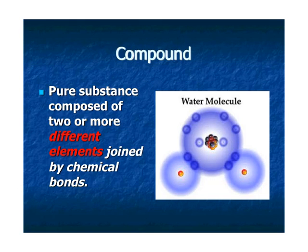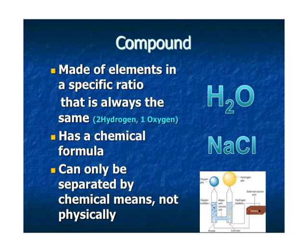A compound is a pure substance composed of two or more different elements joined by chemical bonds. Here you can see two hydrogen atoms and one oxygen atom, and they are chemically bonded together. Compounds are made of elements in a specific ratio that's always the same — water is always two hydrogen atoms and one oxygen atom. They have a chemical formula; for example, the formula for salt is NaCl. Compounds can only be separated by chemical means, not physical means.